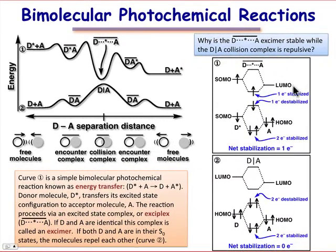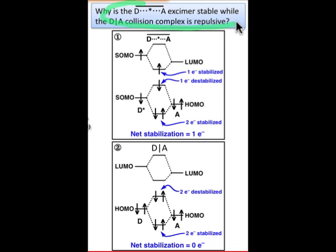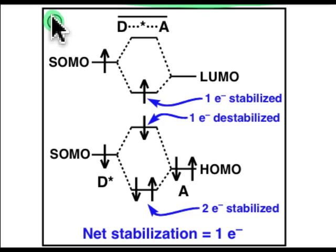Let's use molecular orbital concepts to understand why that excited state complex is stable, but the pair of ground state molecules, when they collide, the result is repulsive. First, let's take a look at curve one, where we have an excited state molecule and a ground state molecule.